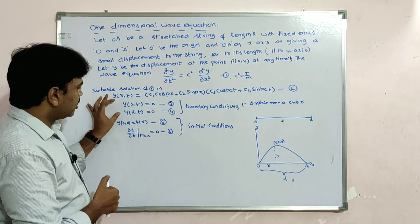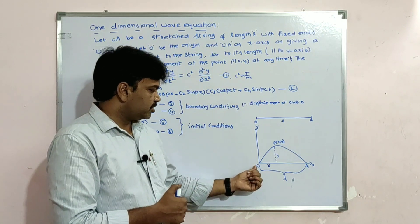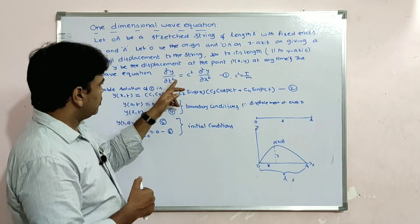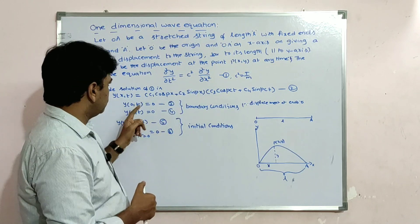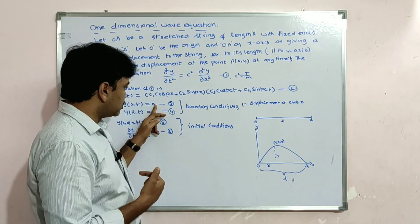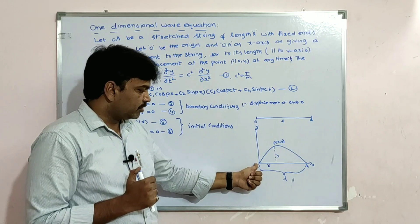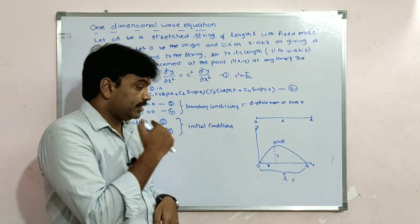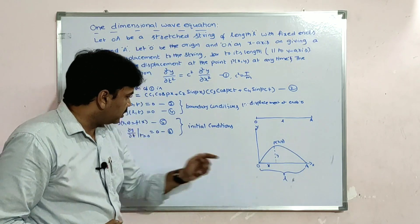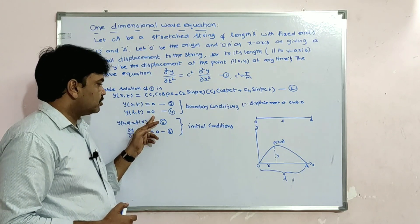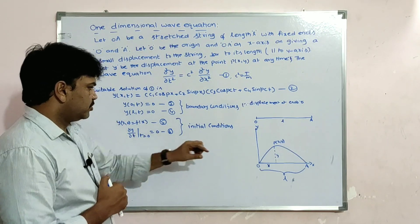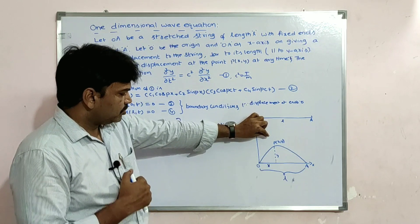These are the boundary conditions. Since y is a function of x and t, at x = 0 there is no displacement, so y(0, t) = 0. Similarly at the end where the length is L, there is also no displacement, so y(L, t) = 0.